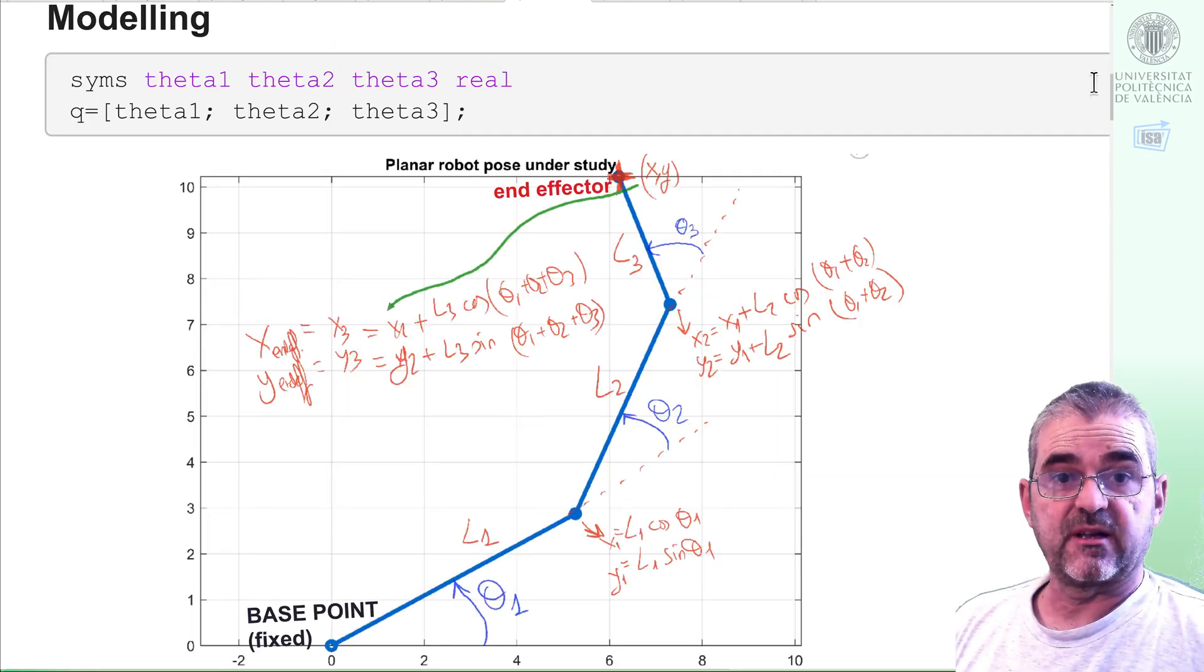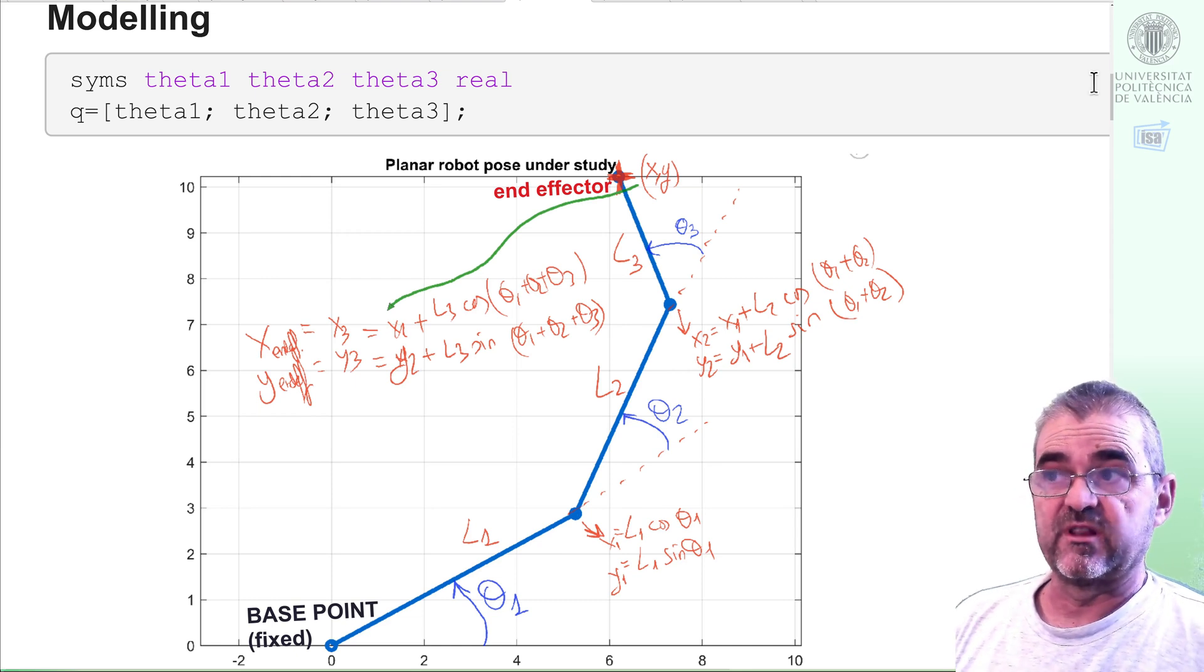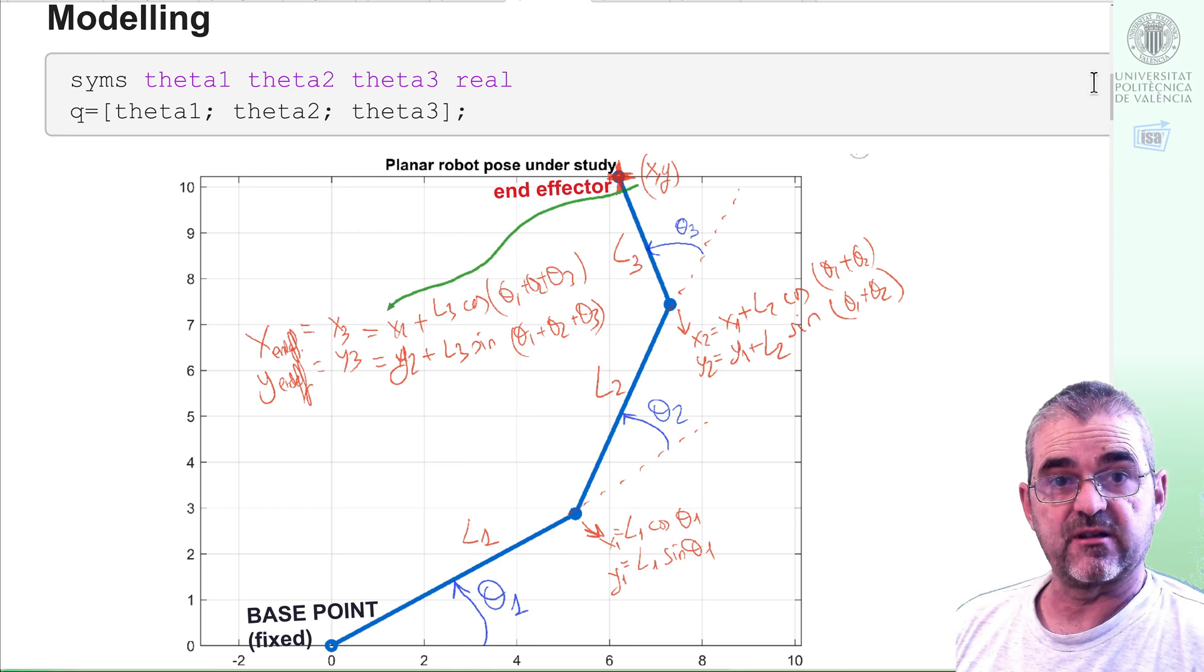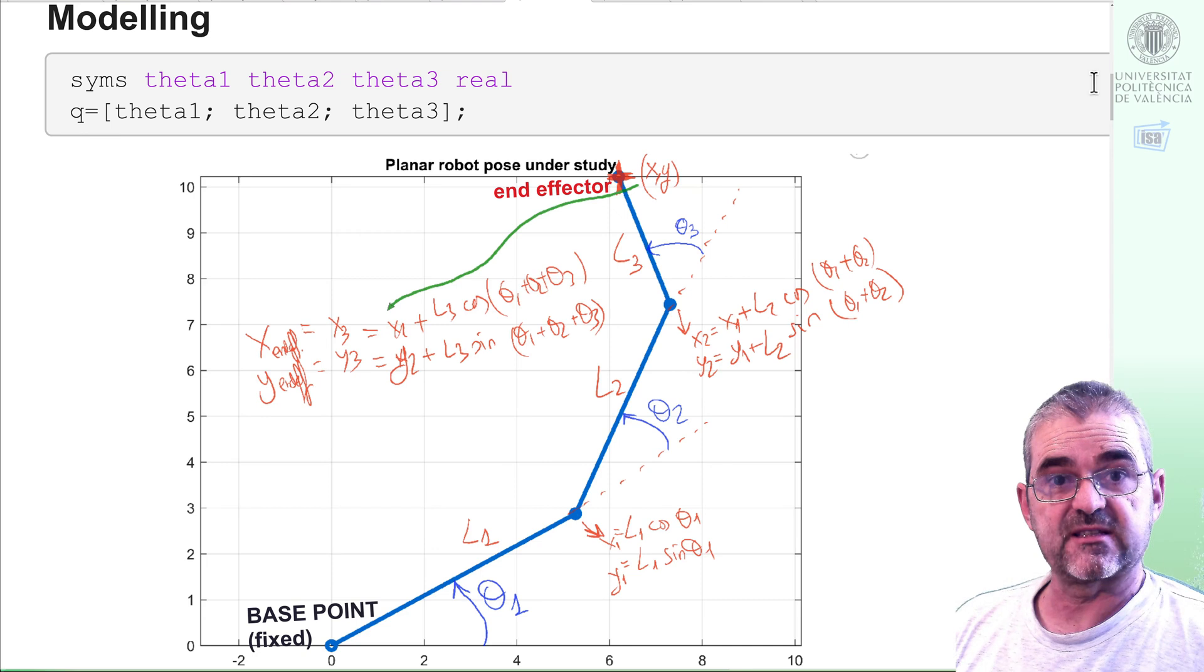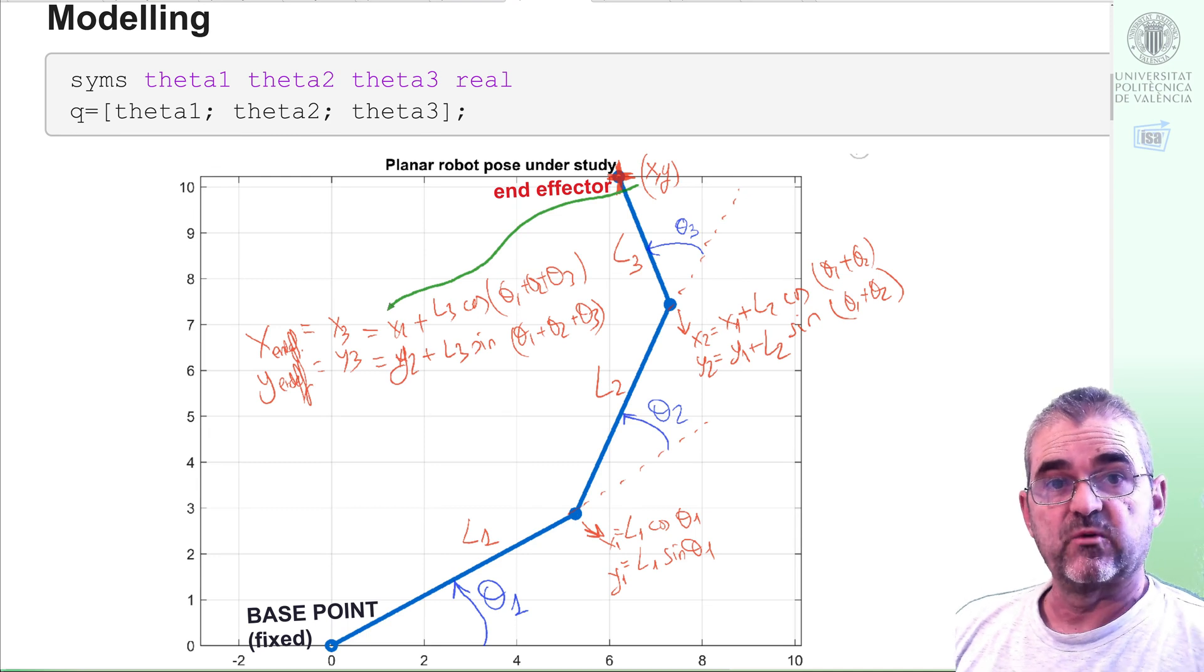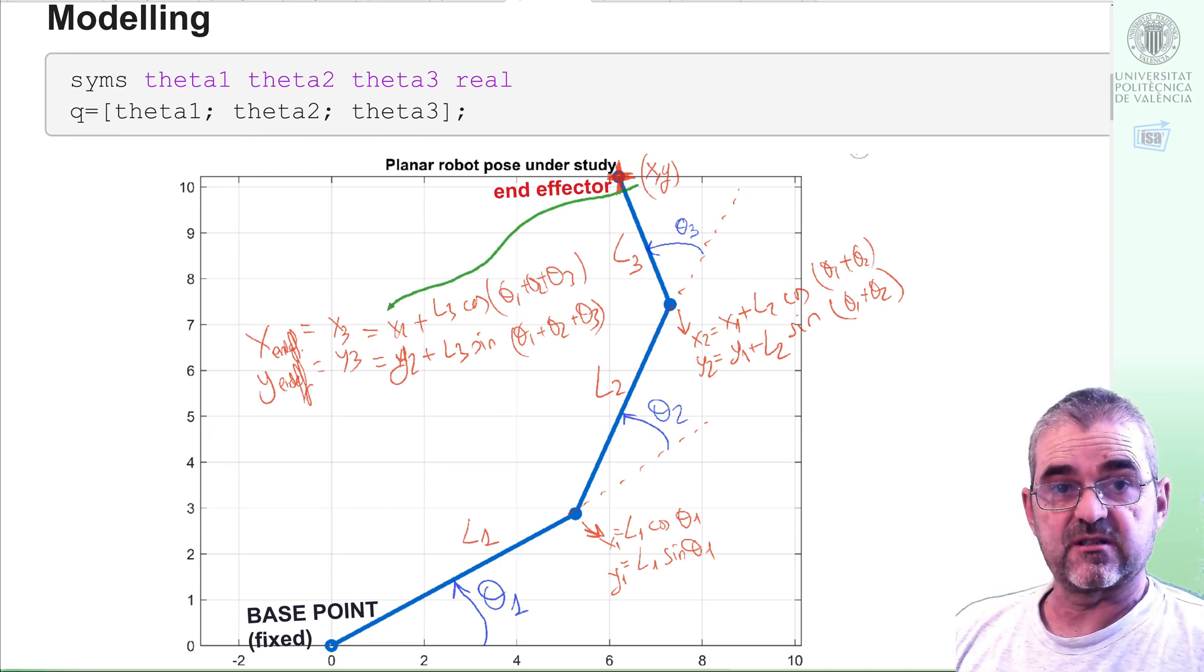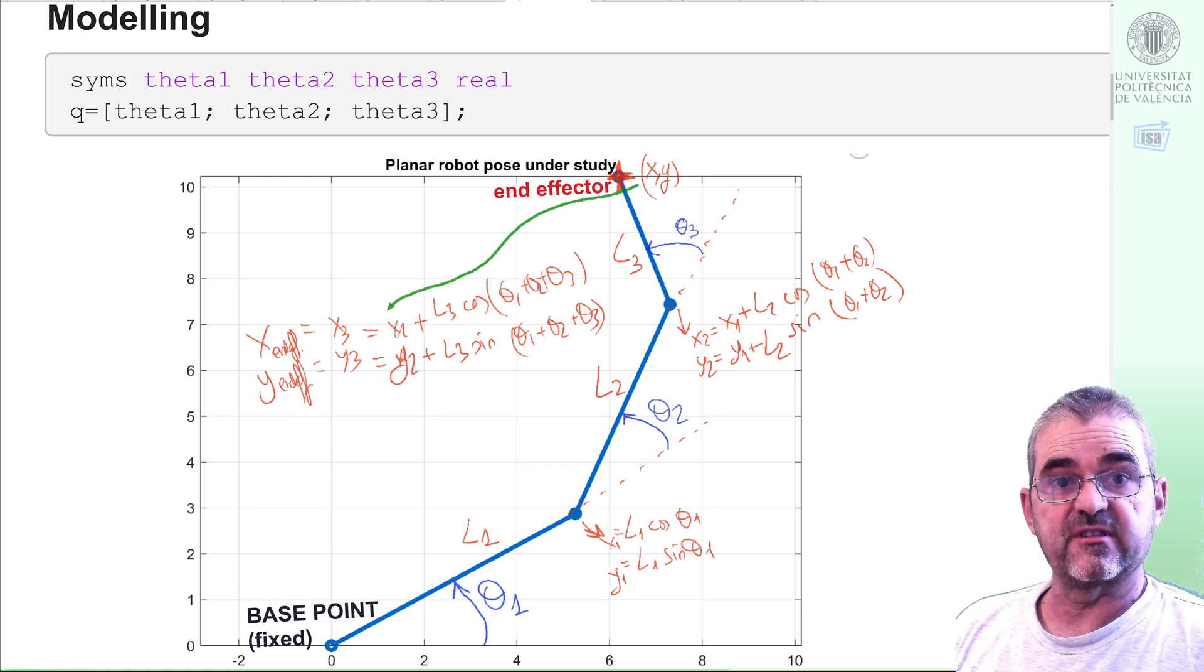The modeling step can be summarized in the figure we're seeing now. We'll define three symbolic variables theta1, theta2, theta3, and all three angles will be stacked in a vector called q. Later when discussing kinematics we'll speak about the vector of angular velocities dot q. Everything will start on how the position of the different elements of my robot is determined from the angular positions of the links.